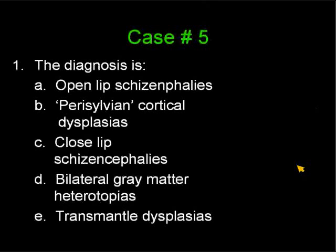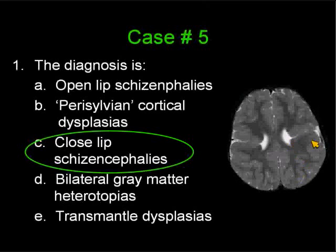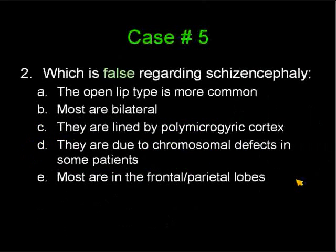Let's see the correct answer. The majority of you said C, closed lip schizencephaly — very good. That is the correct answer. Here's the same patient showing the gray matter extending from the surface of the brain into the lateral wall of the lateral ventricles, and you can see this typical dimple that schizencephaly does have.